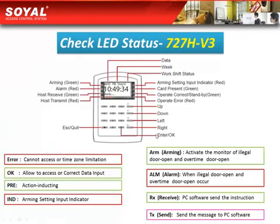This picture shows all the buttons and lights of the 727H V3 and what functions or meanings they represent. The basic one: when it shows a red light, it means that you are not allowed to enter. This may be due to an invalid card, wrong password, or the limitation of a time zone.